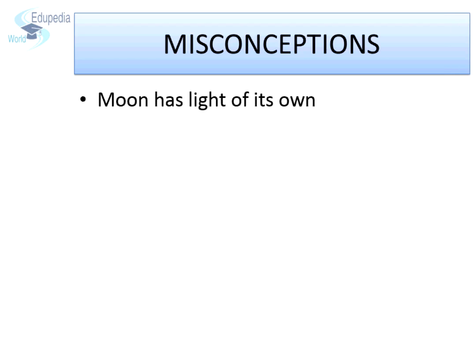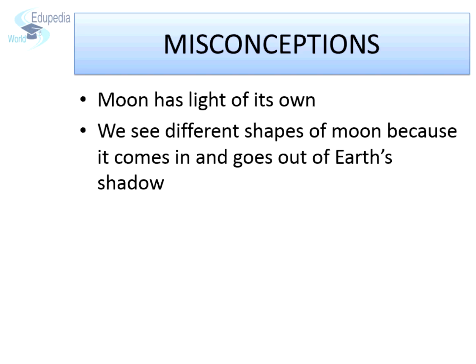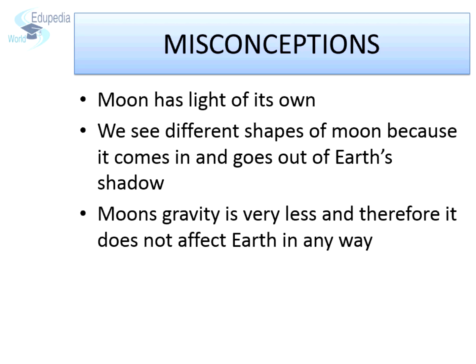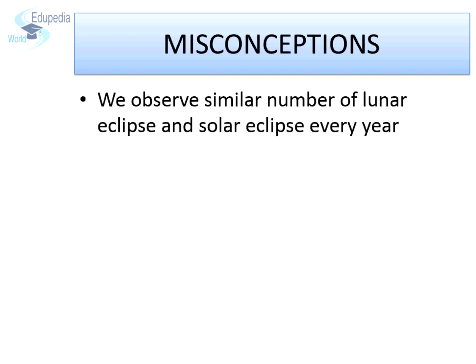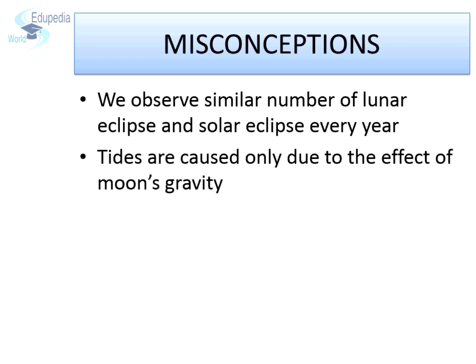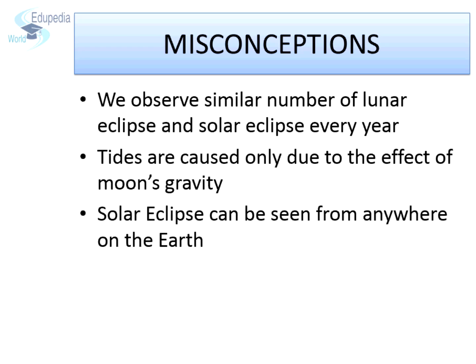First, some misconceptions. Many people believe that the moon has light of its own. Some people believe that we see different shapes of moon because it comes in and goes out of Earth's shadow. Another misconception is that moon's gravity is very less and therefore it does not affect Earth in any way. Lunar eclipse is observed on every new moon. We observe similar numbers of lunar eclipse and solar eclipse every year. Tides are caused only due to the effect of moon's gravity. Solar eclipse can be seen from anywhere on Earth.